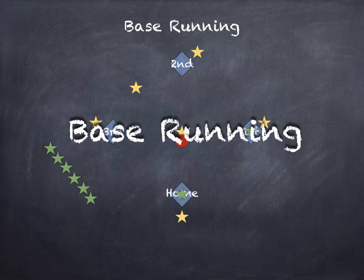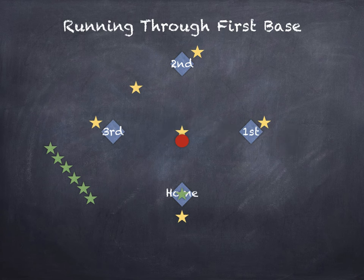Let's talk about base running. When you kick the ball, you run towards first base. First base is a special base — it's the only base you can actually run through. You can run as hard and as fast as you can and keep going straight through the base; we call that running through first base. You just have to get to first base before the ball does. You can't run through second or third base.